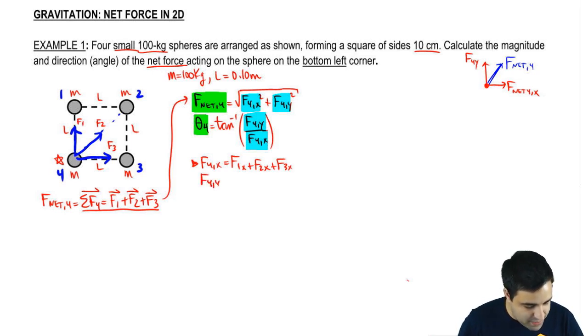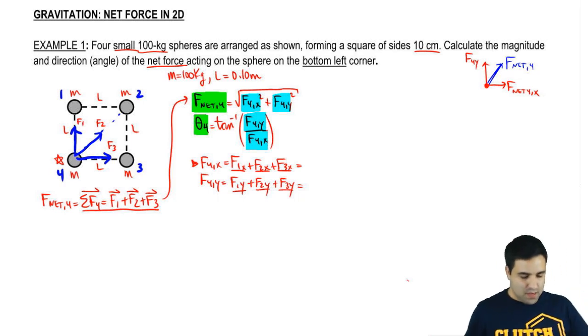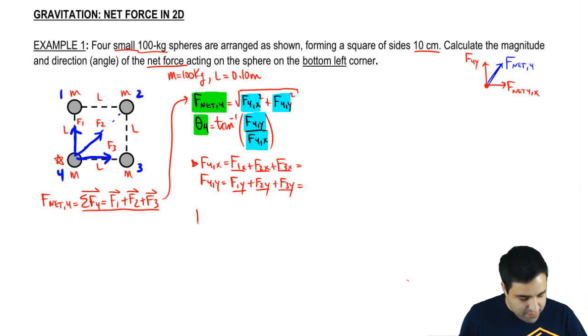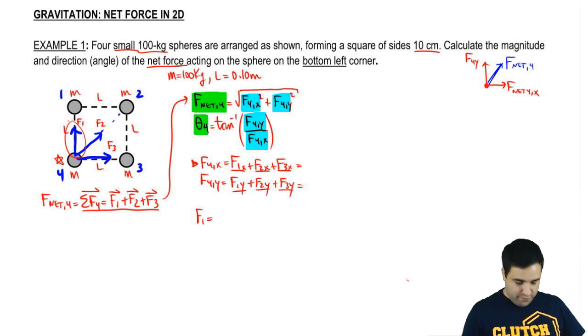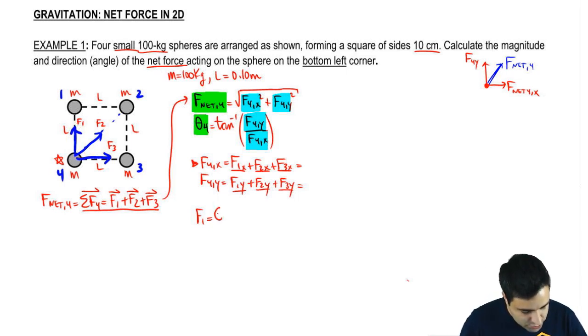And F4y follows the same pattern: F1y, F2y, F3y. So now I have to get these six numbers, and then I'll be able to plug it all in. But what is F1? F1 is the pull, the attraction between the 1 and the 4. So let's do that.